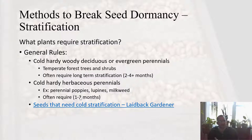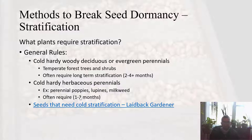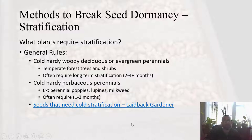As a general rule, cold-hardy, woody, deciduous or evergreen perennials — temperate forest trees and shrubs — will often require stratification, sometimes two to four months. Cold-hardy herbaceous perennials like milkweed, lupines, or perennial poppies also require stratification. Plants that grow in areas experiencing cold typically require some form of stratification — an evolutionary adaptation allowing seeds to wait to germinate until the following spring after their required period of cold signaling winter.